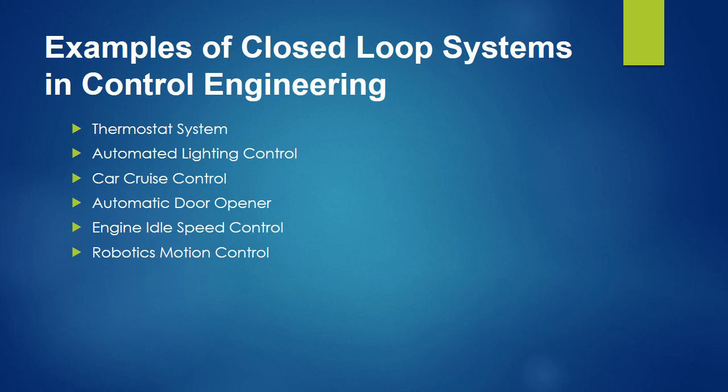Some examples of closed-loop systems in control engineering include: thermostat system, automated lighting control, car cruise control, automatic door opener, and engine idle speed control.